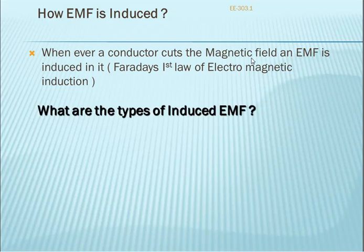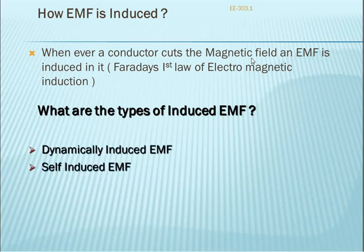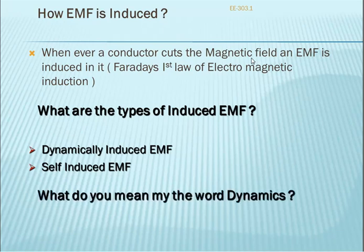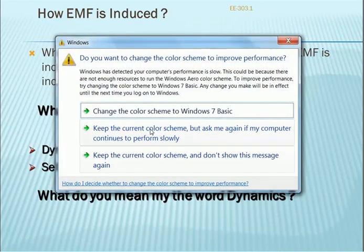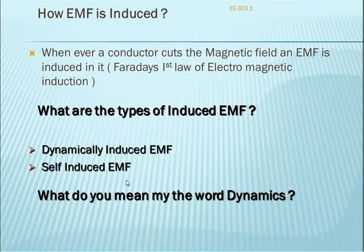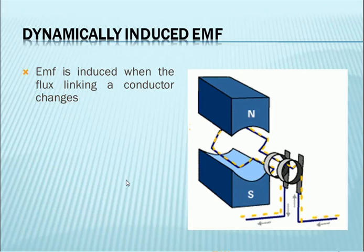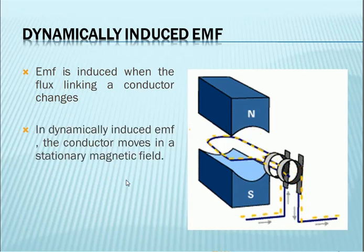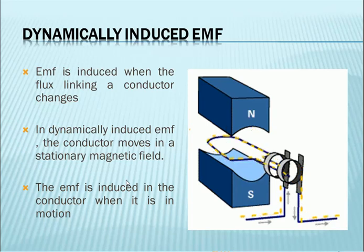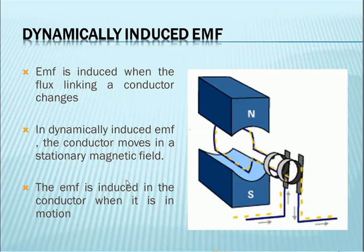What are the types of induced EMF? One is dynamic induced EMF; next is self-induced EMF. Dynamic is related to motion — if there is no motion, there is no dynamic EMF. Dynamic induced EMF: EMF is induced when the flux linkages of a conductor change due to rotation. The conductor moves in a stationary magnetic field — conductors are rotated while the magnetic parts are stationary.